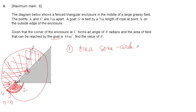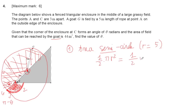The semicircle of the bigger circle has radius equal to five. The area of a full circle is pi r squared, and a semicircle is one half of that, so you will have 25π divided by 2.